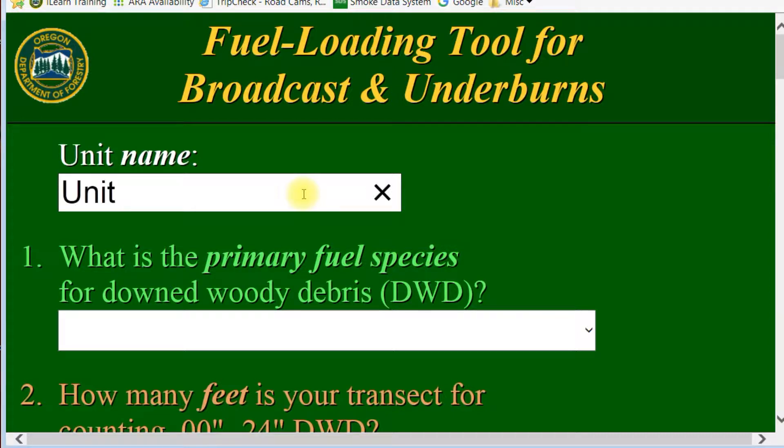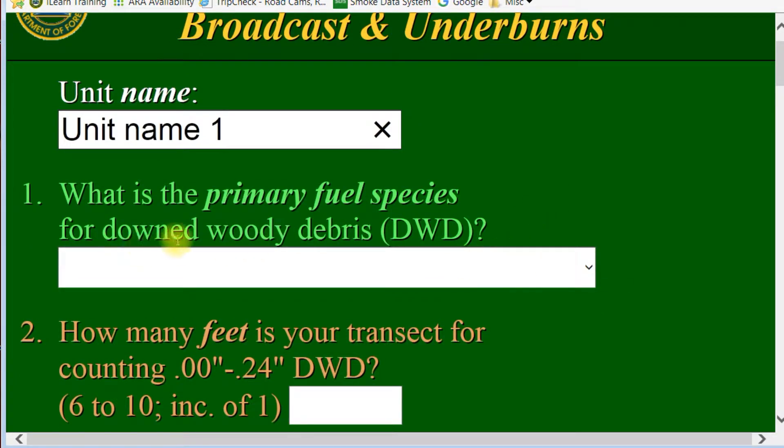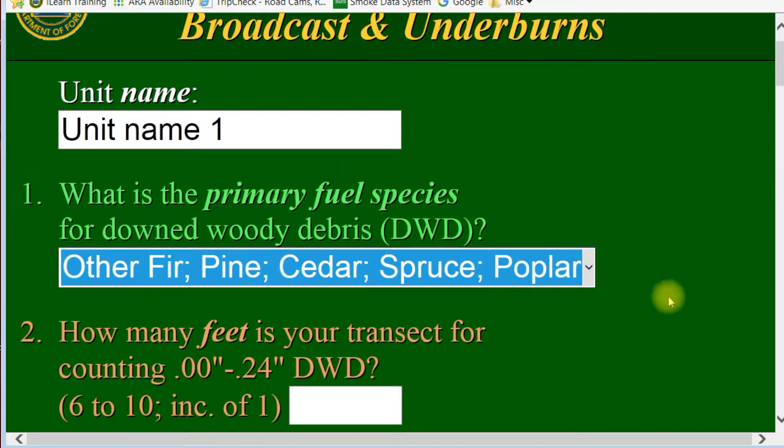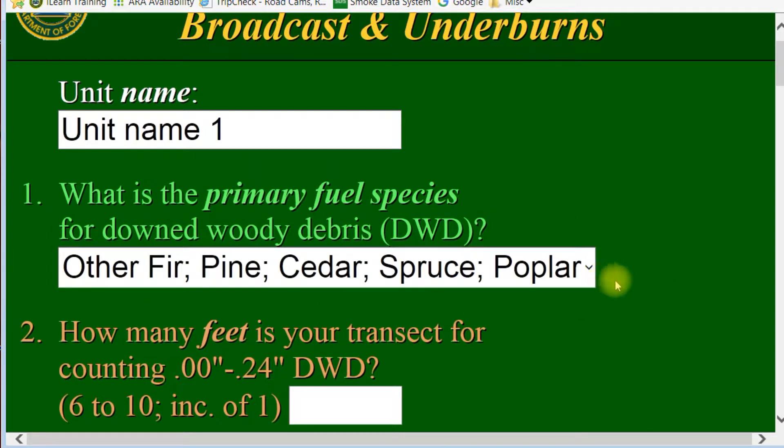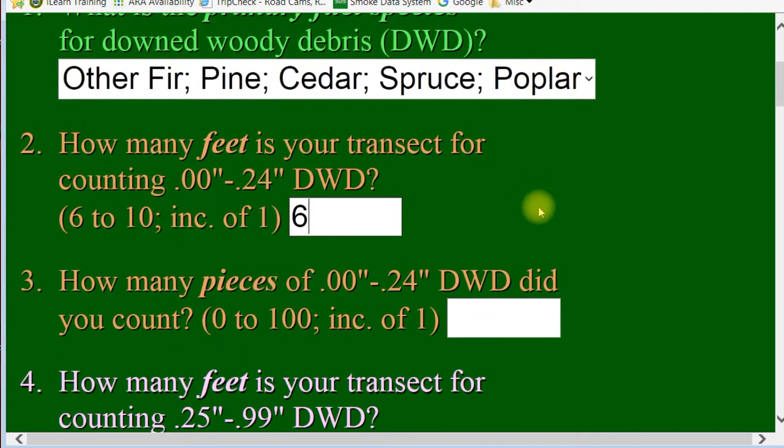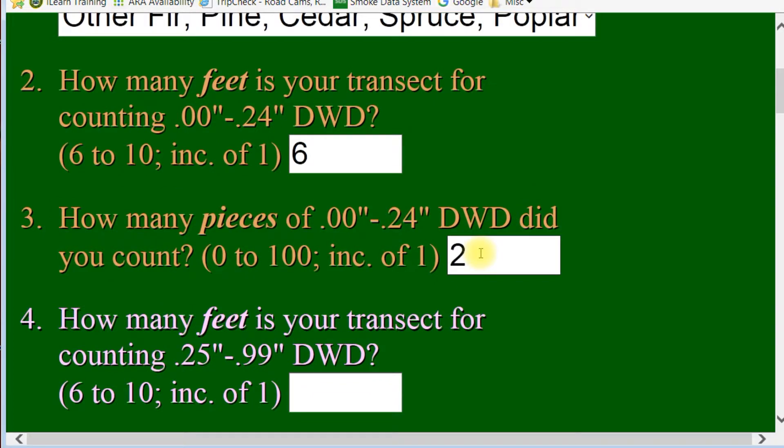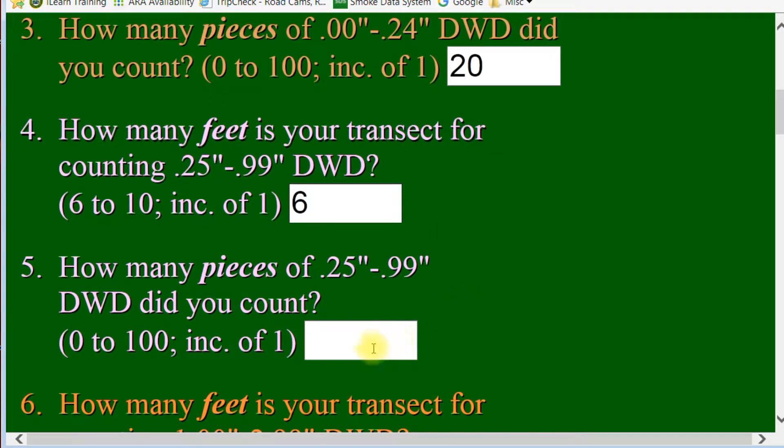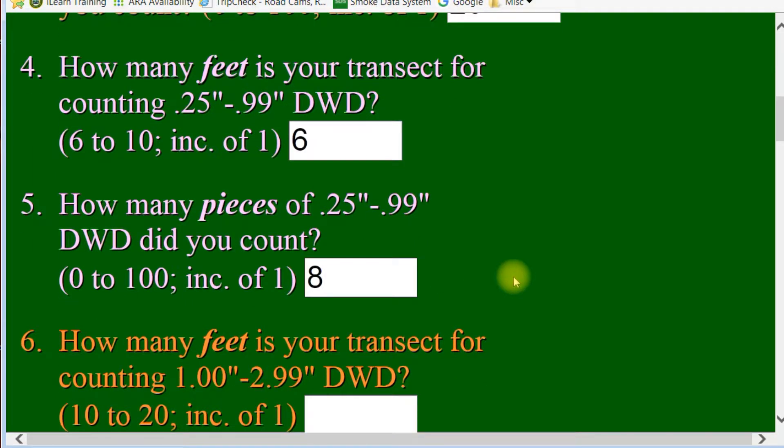A lot of this is pretty intuitive. Your unit name, you're going to put in your name. What is your primary fuel species for your downed woody debris? Here you have some options. You pick what you want based on the genus categorized together for what's close in the gravities. How many feet is your transect? For zero to quarter, you put in how many feet you used and then how many pieces did you count. Number four, how many feet for your transect for counting quarter to one inch? How many pieces did you count for that quarter to one? Let's give it, say eight.